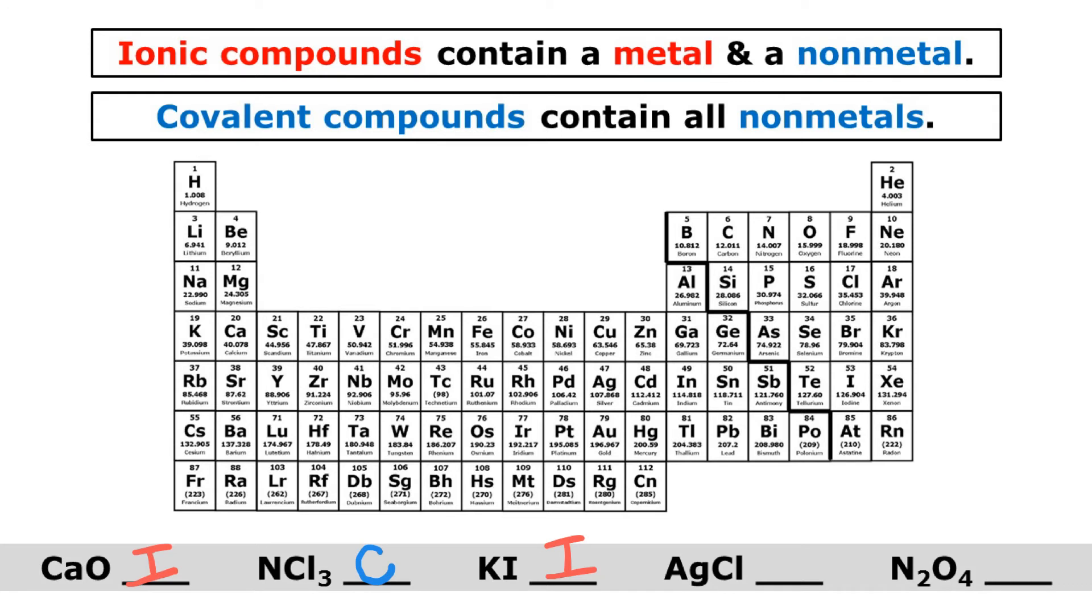AgCl is silver chloride. Silver is a metal and chlorine is a non-metal.